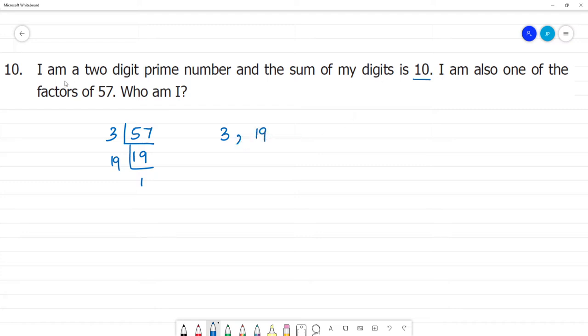I am a two-digit prime number. 3 is a single-digit prime number. 19 is a two-digit number. 1 plus 9 is 10, so the sum of my digits is 10.